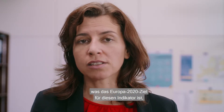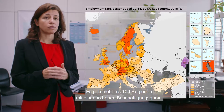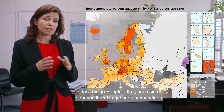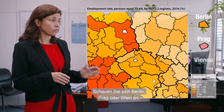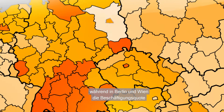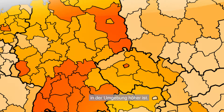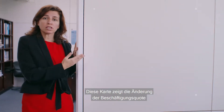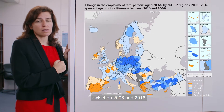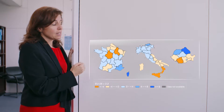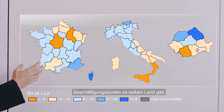The highest employment rates, equal to or above 75% — which is the Europe 2020 target for this indicator — are marked in the two darkest shades of orange. There were more than 100 regions with such a high employment rate. It is also interesting to note that some capital regions stand out from their surroundings. Look at Berlin, Prague or Vienna. In Prague the employment rate was higher in the city, while in the case of Berlin and Vienna the employment rate is higher in the surrounding region. This map shows the change in employment rate between 2006 and 2016. In some countries like Italy, France or Romania, this map is very colourful, indicating that there are both increasing and decreasing employment rates within the same country.